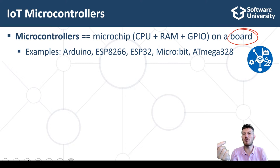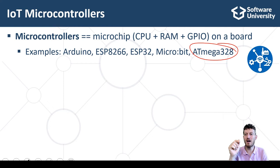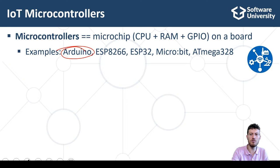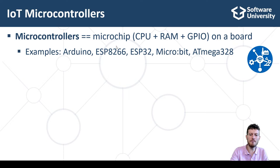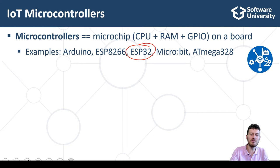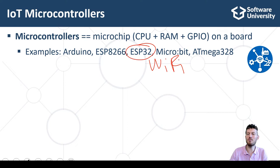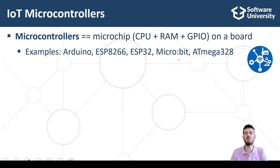Examples of microcontroller boards include the Atmega328, a low-cost single chip microcontroller created by Atmel; Arduino Uno, an open source microcontroller based on the Atmega328 chip; Microbit, an open source microcontroller designed by the BBC for computer education in the UK; NodeMCU, a low-cost open source IoT platform based on the ESP8266 microchip with integrated Wi-Fi; and ESP32, a series of low-cost, low-power system-on-a-chip microcontrollers with integrated Wi-Fi and Bluetooth. Internet-connected microcontrollers are also called IoT microcontrollers or IoT devices.